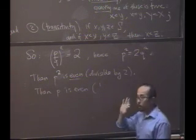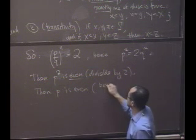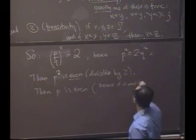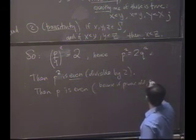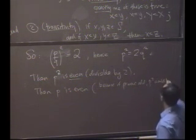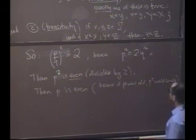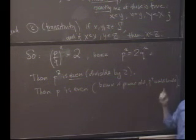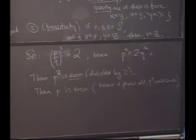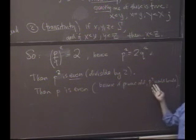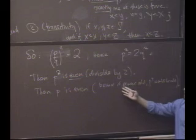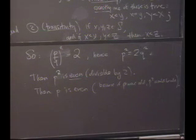But another way to say it is then P is even. And here's one way to justify it. You might say because if it were odd, if P were odd, P squared would be odd. Or another way to say it is if P squared had a factor of 2, then P would have to have a factor of 2 as well. Then P is even.